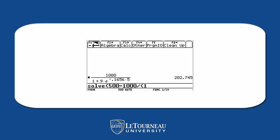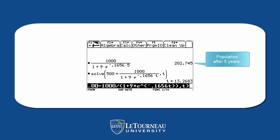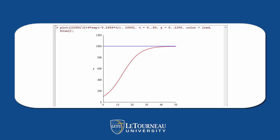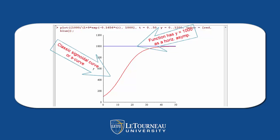When will the population be down to only 500? We put our formula in again, but in this case we don't know what t is. We put in the 0.1656t and ask it to solve for t. We notice that in 13 years we will be down to... actually I misspoke — the population is increasing. After five years, we've got 202; we started with 100. So the number of months for the population to reach 500. Let's pull out Maple and look at this — it's your classic S-curve. The function has y equal to 1,000 as a horizontal asymptote. It's increasing everywhere, but notice how the increasing slows down as it approaches that asymptote of y equal to 1,000.